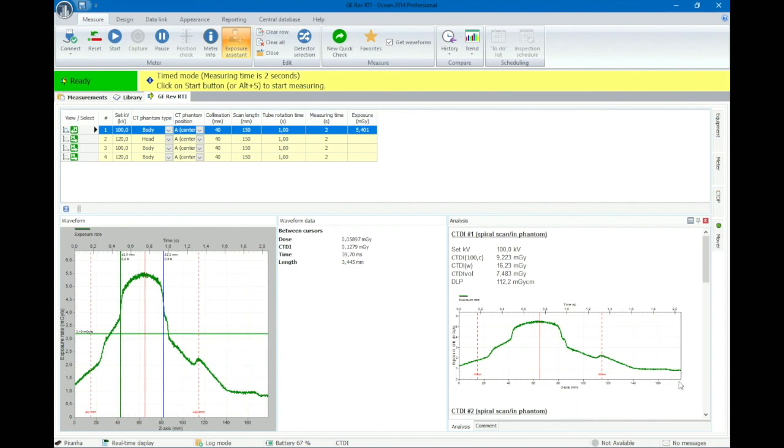You can study a complete view of the dose profile. In the graph you can see two red lines. The dose between them is the CT DI 100.